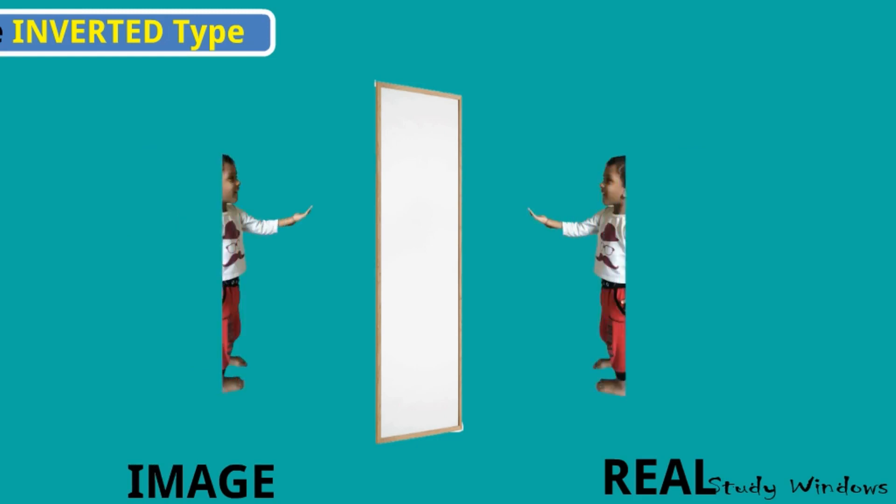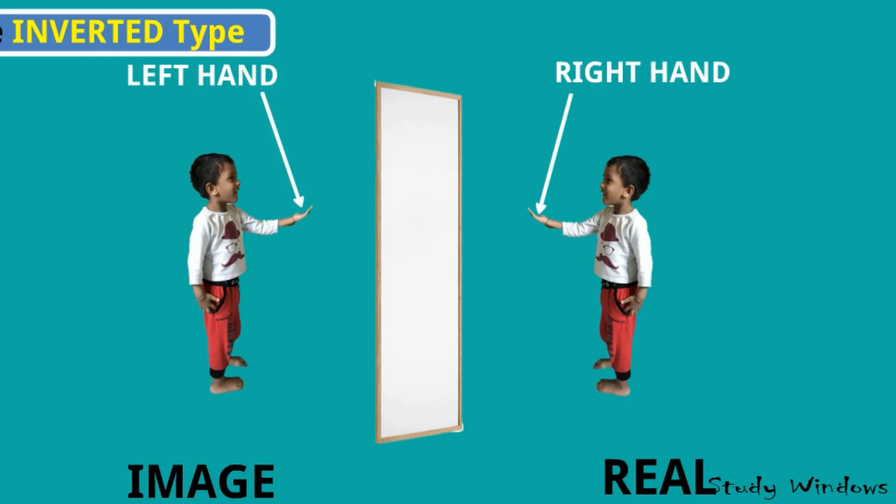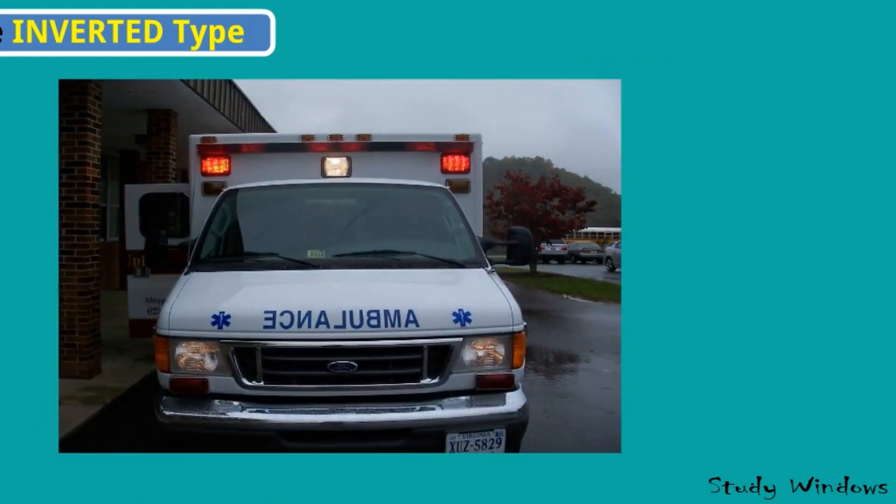Another example - if you keep your right hand in front of a mirror, you will see in the image you are having the left hand in the same position because there is an apparent left-right reversal in the plane mirror and it is called lateral inversion.